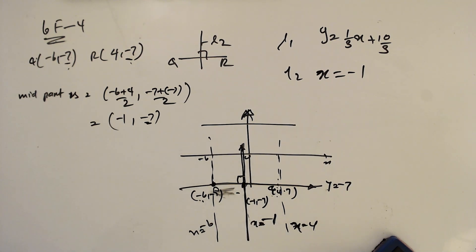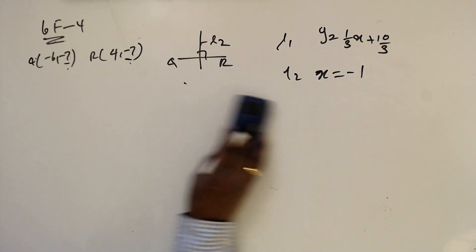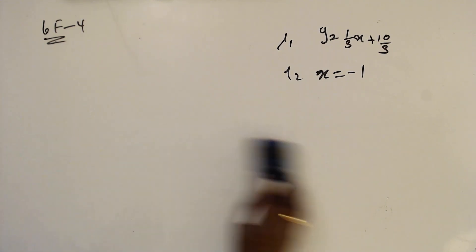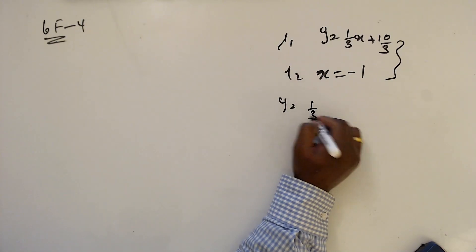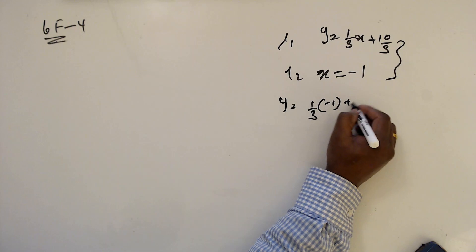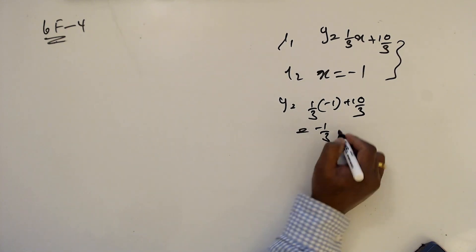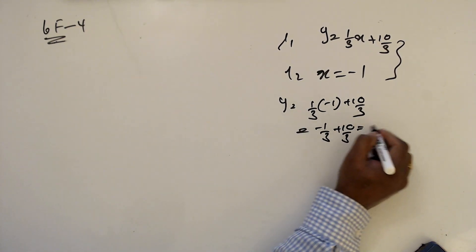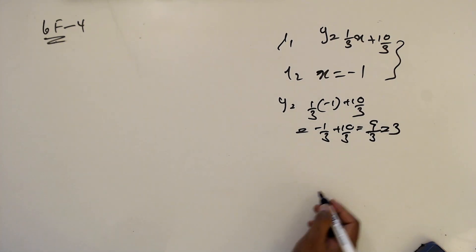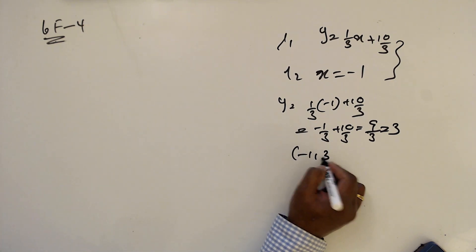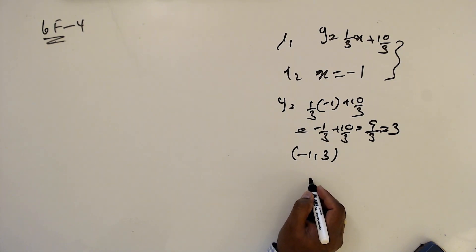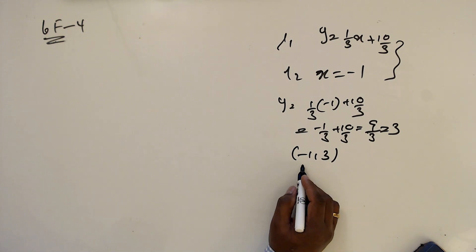Now I have to solve those two lines simultaneously to get the center. When I substitute x equals minus 1 into y equals 1 over 3 x plus 10 over 3, I get y equals minus 1 over 3 plus 10 over 3, which is 9 over 3, which is 3. So the intersection point is minus 1, 3, and this is the center.